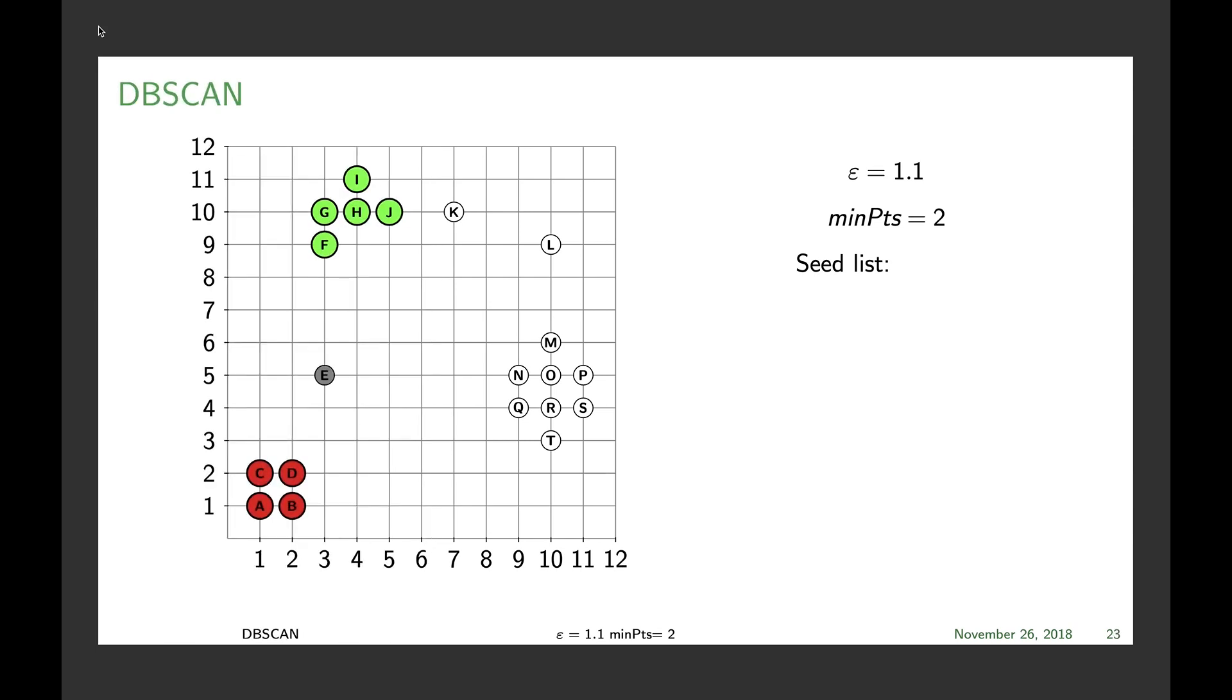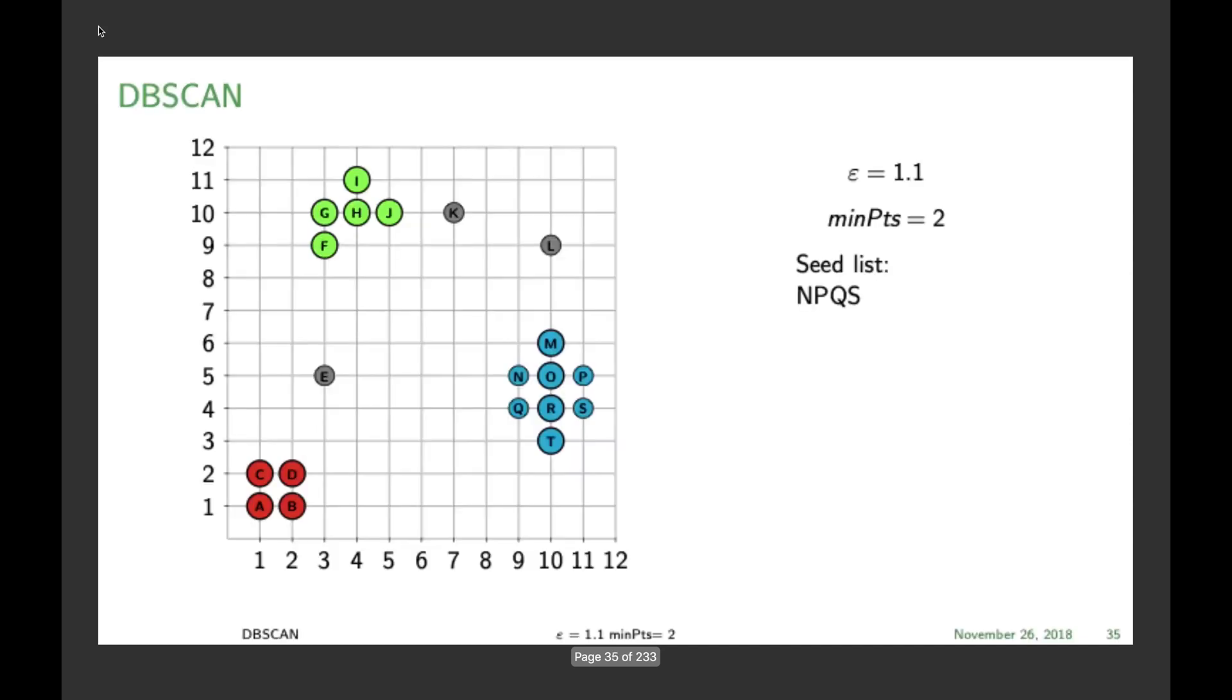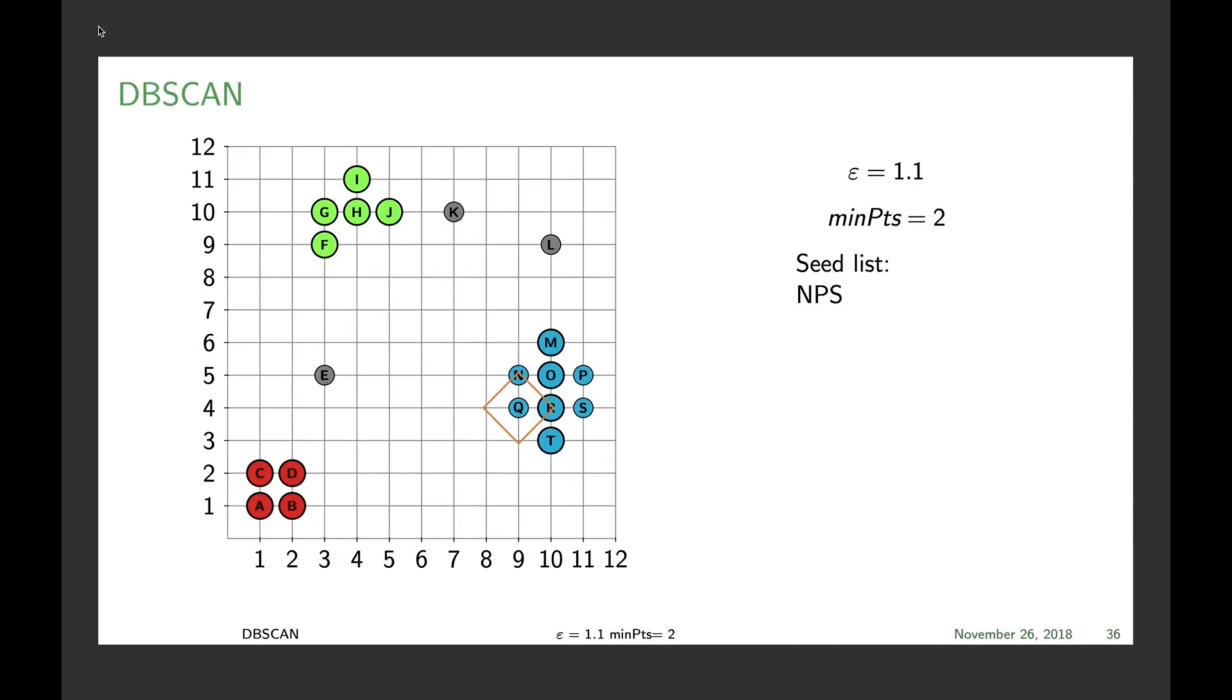We then check K which becomes noise, L which becomes noise, and the last points M, O, R, T, Q, N, P and S. So that's for epsilon 1.1 and minPts 2.